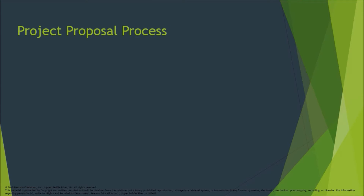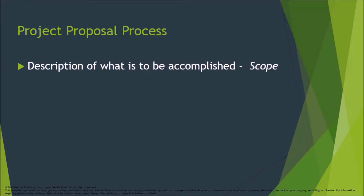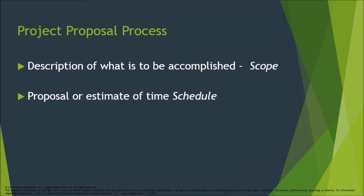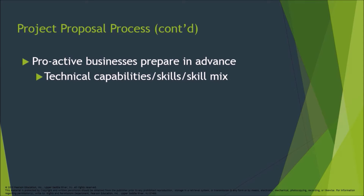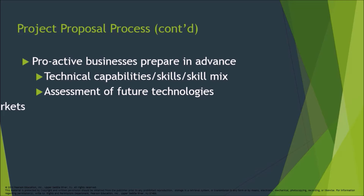Project proposal process: Description of what is to be accomplished — scope. Proposal or estimate of time schedule. Proposal or estimate of cost budget. Proactive businesses prepare in advance: technical capabilities or skill mix, assessment of future technologies, and assessment of future markets.